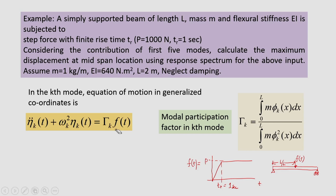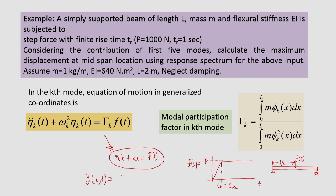The modal participation factor Γk = ∫₀ˡ m·φk(x) dx / ∫₀ˡ m·φk²(x) dx. This single-DOF form is analogous to Mẍ + Kx = F(t). The actual response is built up by modal superposition over n modes. For the simply supported beam, mode shapes are φk(x) = sin(kπx/l) and natural frequency ωk = (kπ)²·√(EI/ml⁴).